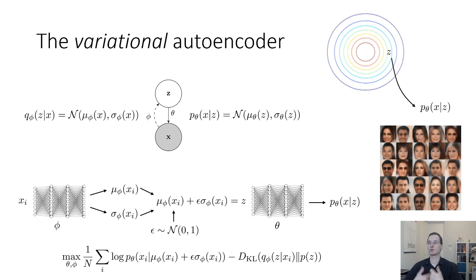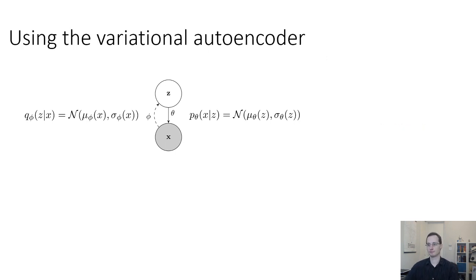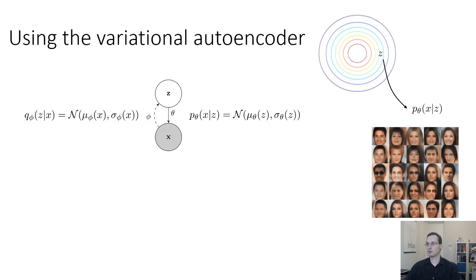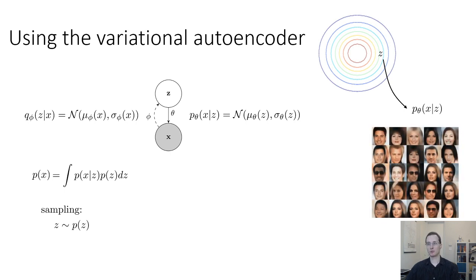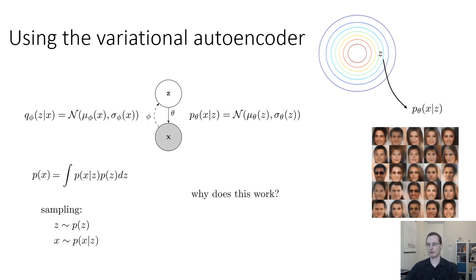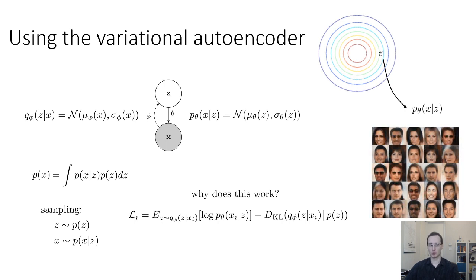The z's will look familiar to the decoder and it will be able to turn them into realistic images, because during training the encoder was encouraged to produce z's that look similar to the prior, and therefore the decoder was trained to produce reasonable images using those z's. To use the VAE, you just sample z from the prior p of z. The KL divergence term encourages the encoder to produce z's that look similar to those from the prior.